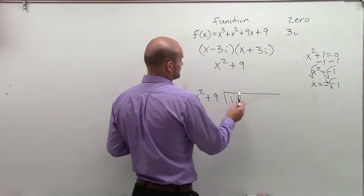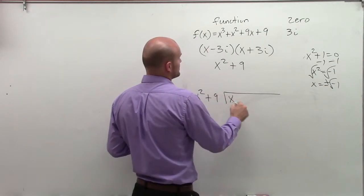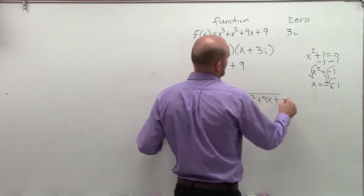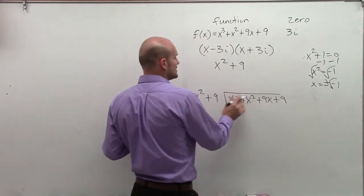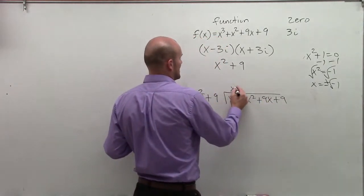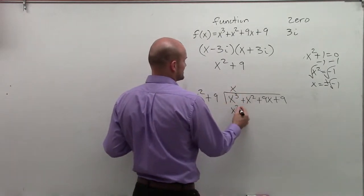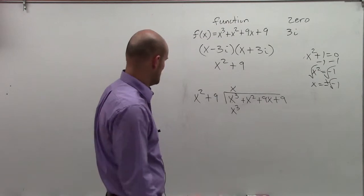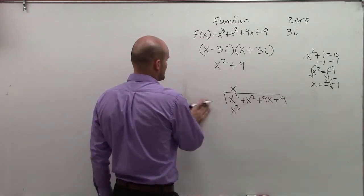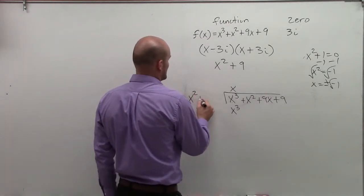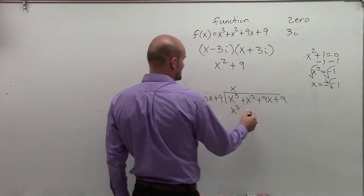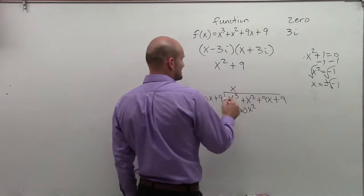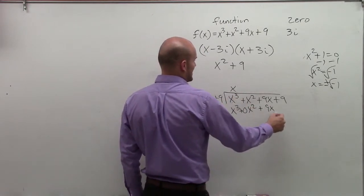So I'm going to use long division. So I have x cubed plus x squared plus 9x plus 9. So x squared goes into x cubed x times. x times x squared is x cubed. I want to put a 0x in there. x squared plus 0x plus 9. x times 0x is going to give me 0x squared. x times 9 is going to give me a positive 9x.